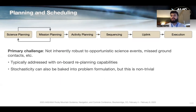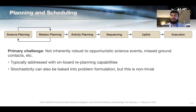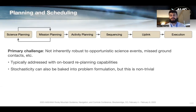The primary challenge with this is that it's not robust to opportunistic science events or missed ground contacts. Typically this is addressed with onboard replanning capabilities — for example, JPL's CASPER system. You can also bake stochasticity into your problem formulation, but that's non-trivial, and it usually only addresses one of these different issues at a time.